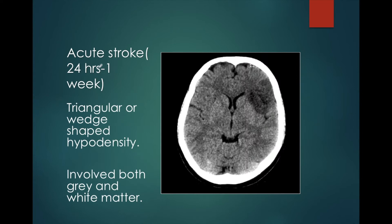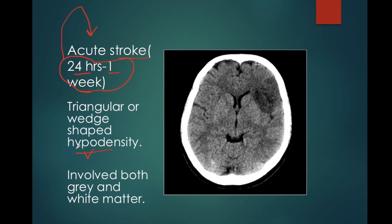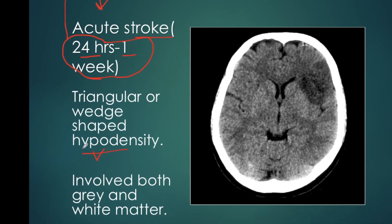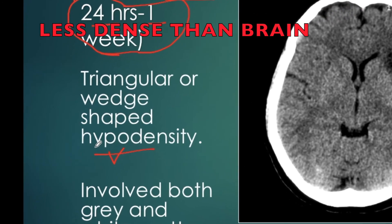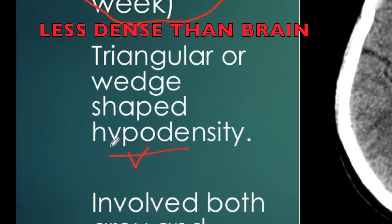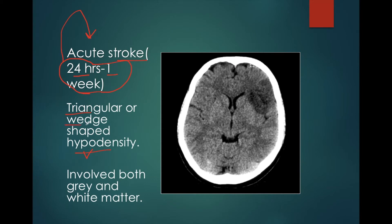What are the features of acute stroke? If the patient presents after 24 hours and within one week, which is the usual scenario, then it is known as acute stroke. In acute stroke, the findings on CT scan of the head are presence of triangular or wedge-shaped hypodensity. Hypodensity means the area involved should be less dense than the adjacent brain parenchyma and it should be triangular or wedge-shaped.